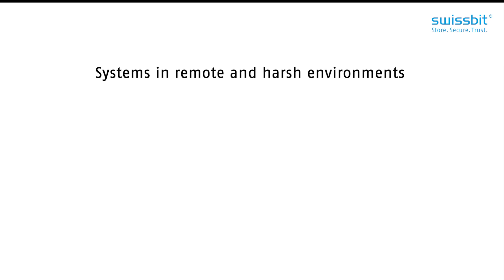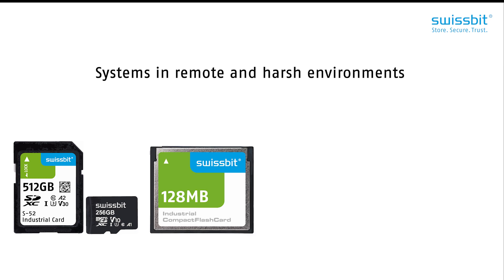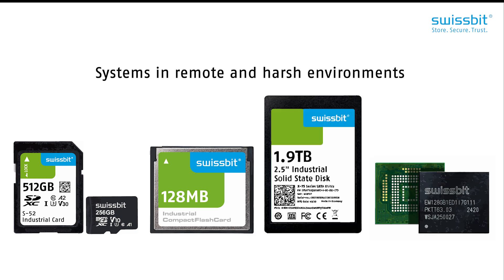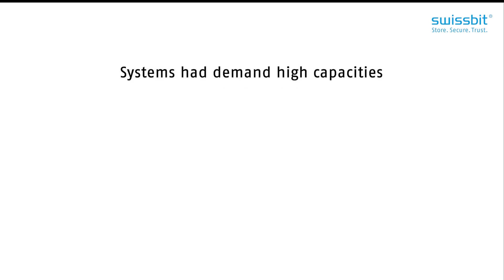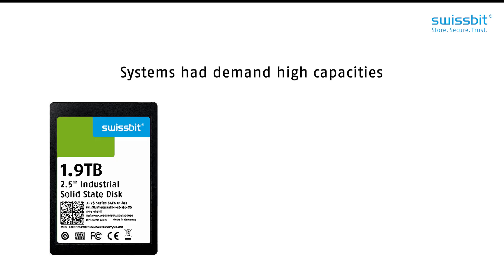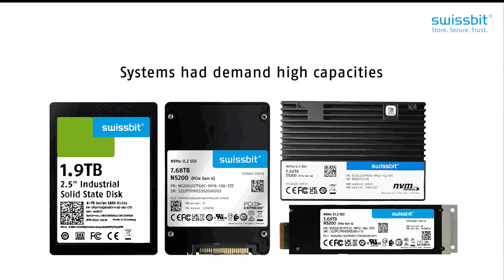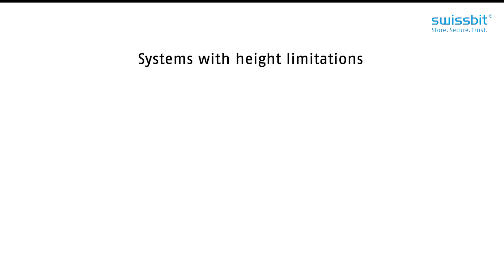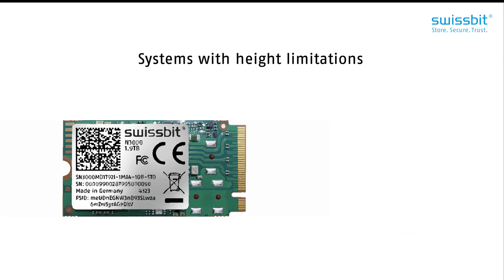Systems in remote and harsh environments often implement robust encapsulated products like SD and compact flash cards, but also 2.5-inch SSDs or eMMC. These products boast stability, offering reliable shock and vibration protection alongside minimal corrosion and dust vulnerability. Systems that demand high capacities often implement 2.5-inch SSDs or NVMe storage solutions with U.2, U.3, or E1.S. Finally, systems with height limitations may require the use of M.2 cards or eMMC solutions.